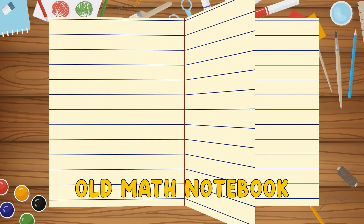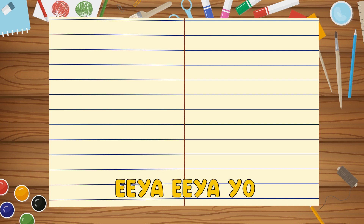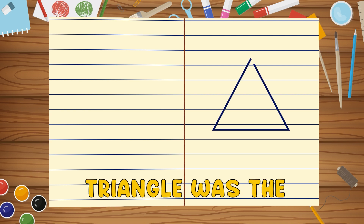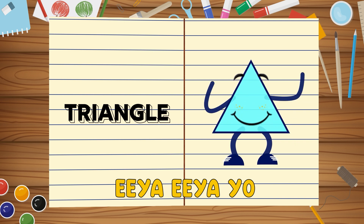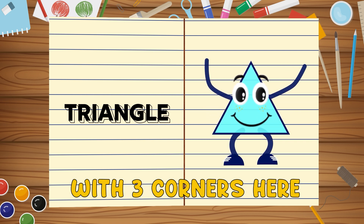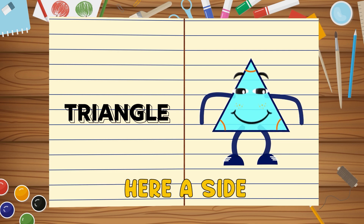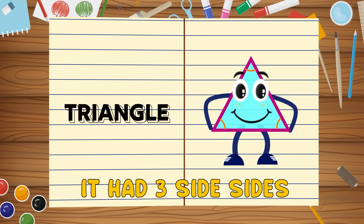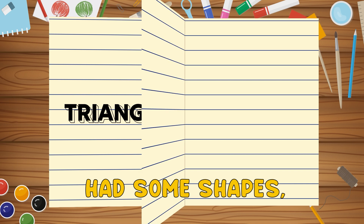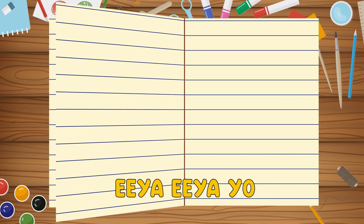Old math notebook had some shapes, E-I-E-I-O. Triangle was the next close shape, E-I-E-I-O. With three corners here and three angles there, here a side, there a side, it had three sides. Old math notebook had some shapes, E-I-E-I-O.